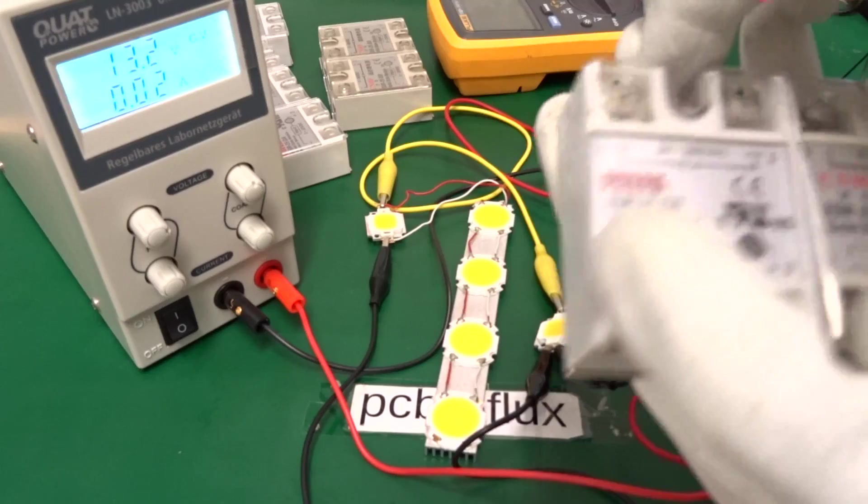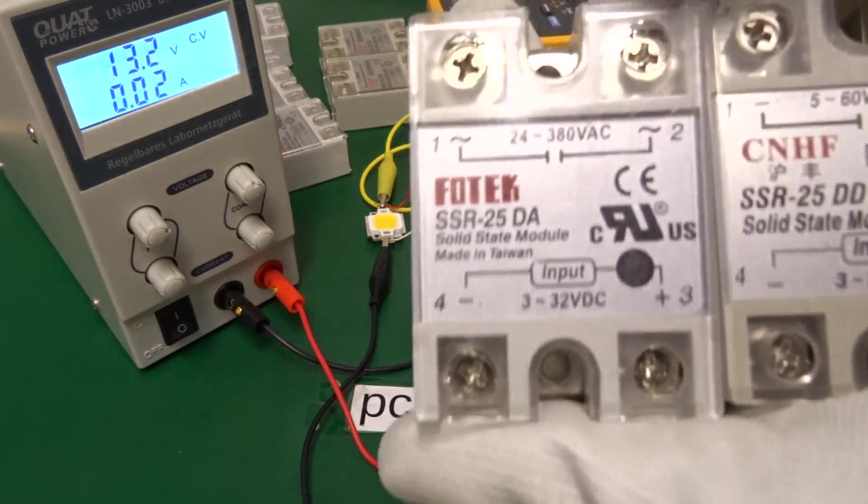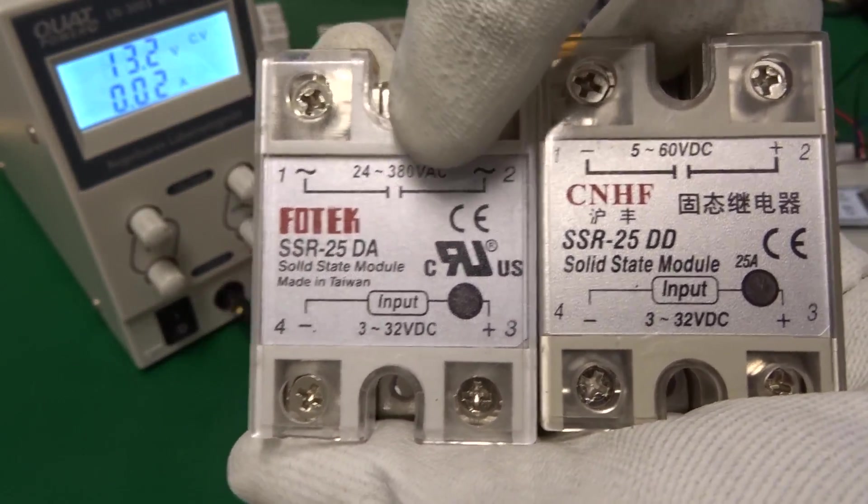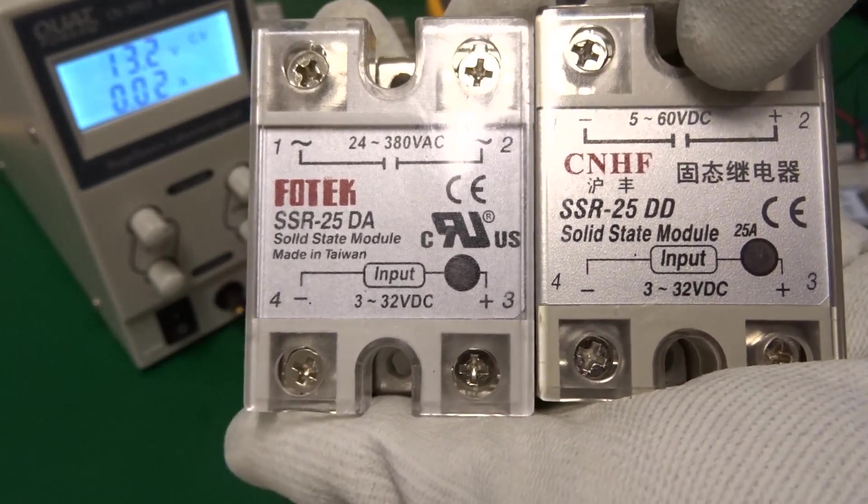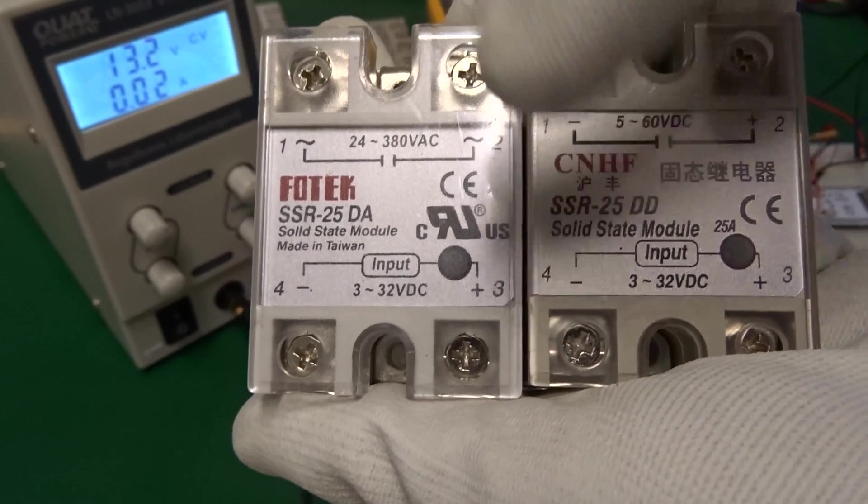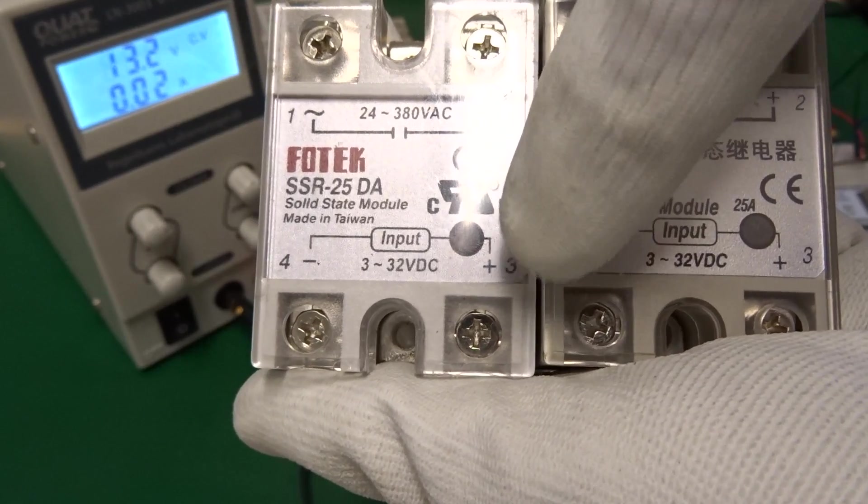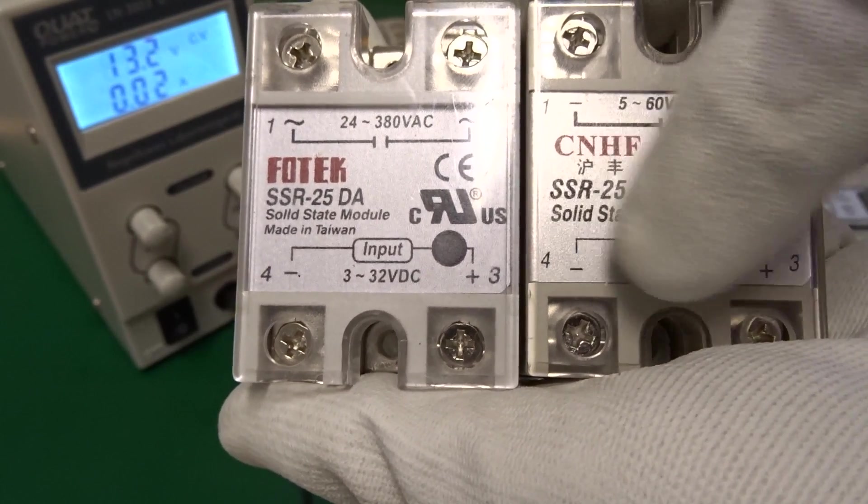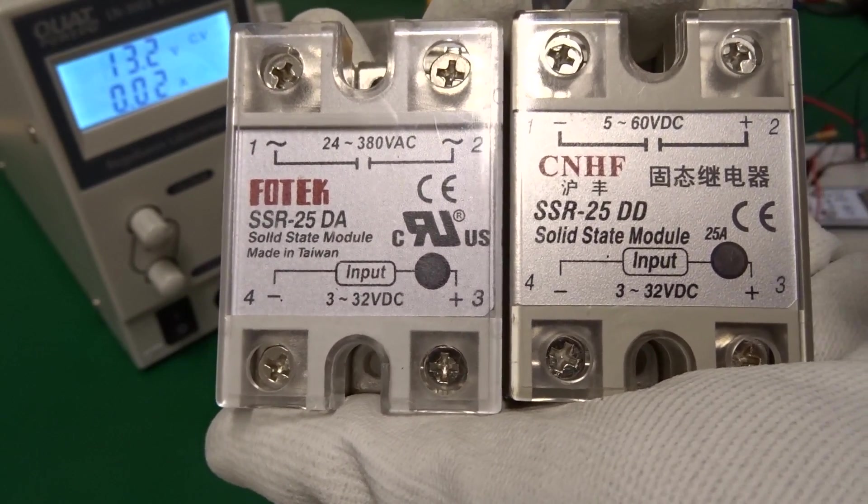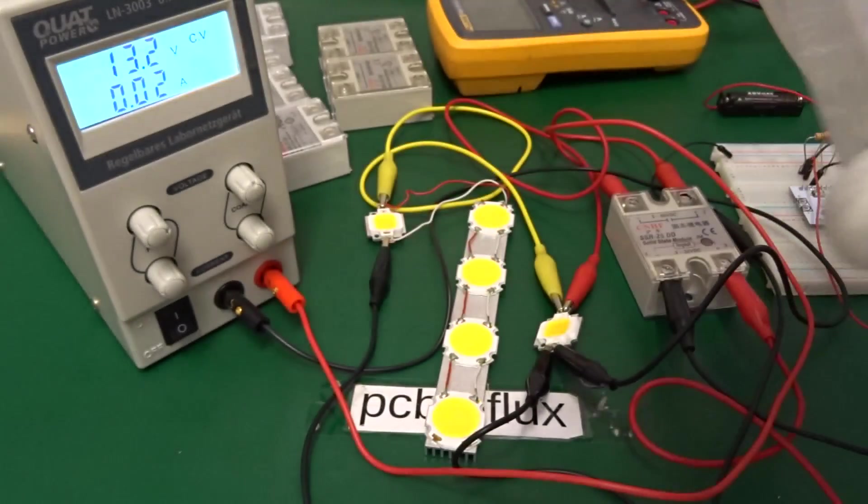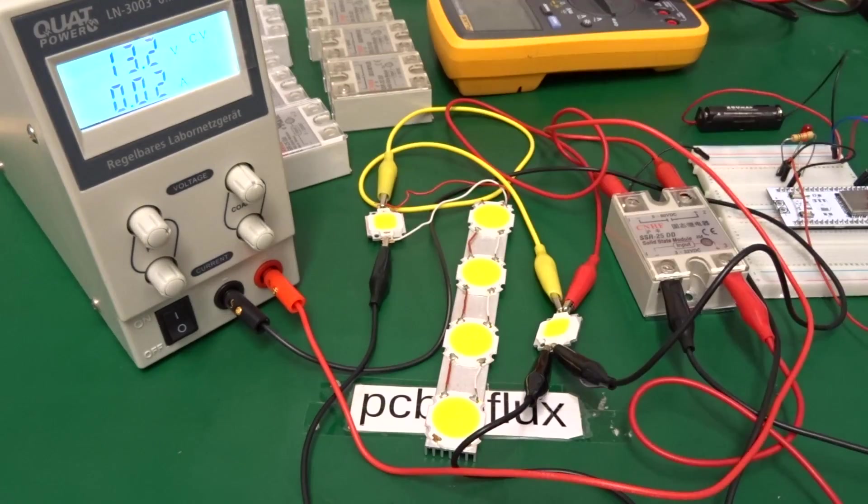And this is compared with the AC solid state relay. We can use it from 24 volts up to 380 volts. And it has also an input from 3 to 32 volts. But as mentioned, if you use this on mains voltage, it can be very dangerous.